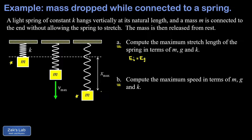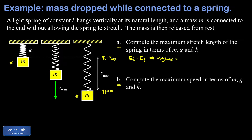Let's clarify the Y coordinate system for gravitational potential energy. I'll call the final Y value zero — it's convenient to set zero at the lowest point in the problem. This means my initial Y value is actually equal to X_max itself, the maximum stretch length of the spring. Plugging in energy terms: the initial state has only gravitational potential energy since the spring is relaxed, and the final state has only spring potential energy: one-half K X_max squared.